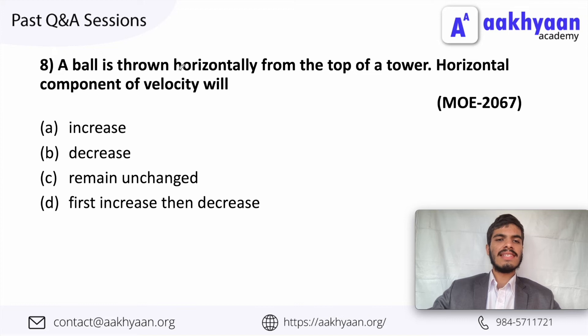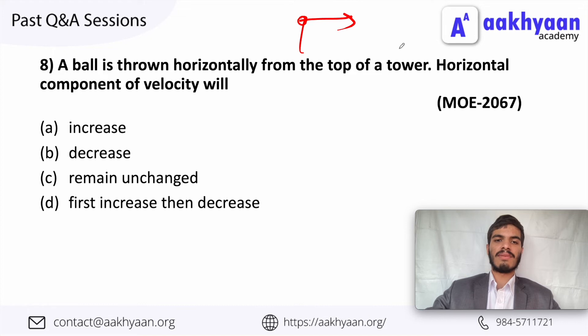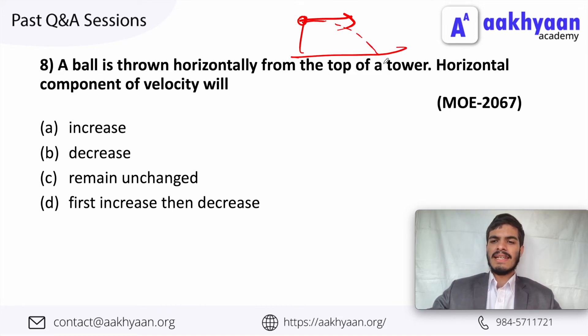A ball is thrown horizontally from the top of a tower. The horizontal component is constant, and the vertical component is due to gravity, which is also constant in acceleration.